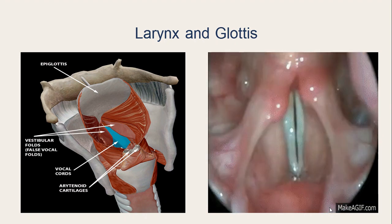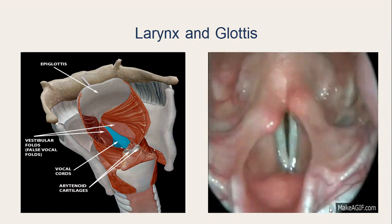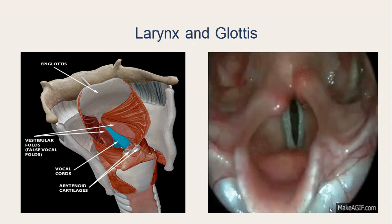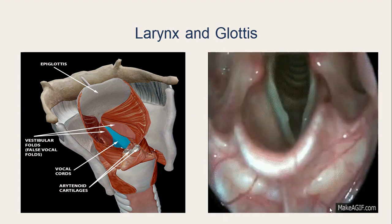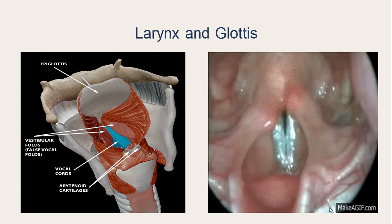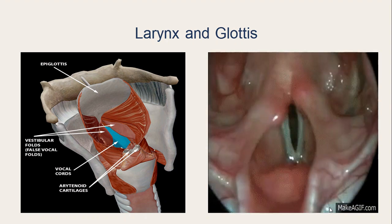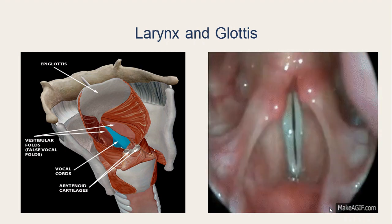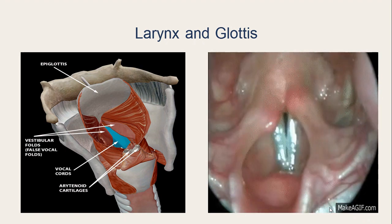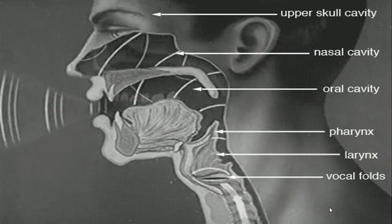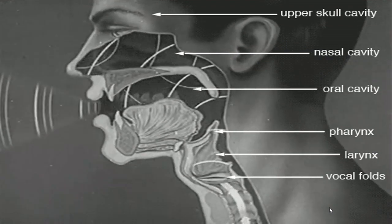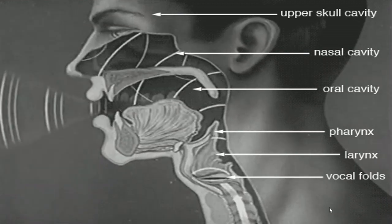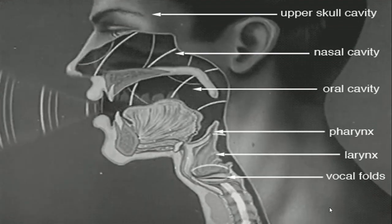Through the glottis, air escapes from the lungs to the windpipe, and then passes to the oral cavity to produce the speech sound. The air that we breathe in and breathe out passes through the glottis. When we breathe normally, the vocal cords are moved away from each other and the glottis is wide open, so air passes freely through without affecting the vocal cords.